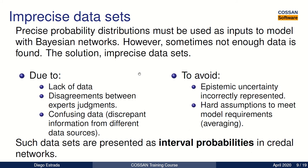From our tutorial on Bayesian Networks, we saw that to build our model we need to provide precise probability distributions for the conditional probability tables. However, that is not always possible due to the lack of data, disagreements between expert judgments, or discrepancies in the information from different data sources. To avoid these problems, we can use imprecise data in the form of interval probabilities to better account for epistemic uncertainty and avoid hard assumptions to meet model requirements.